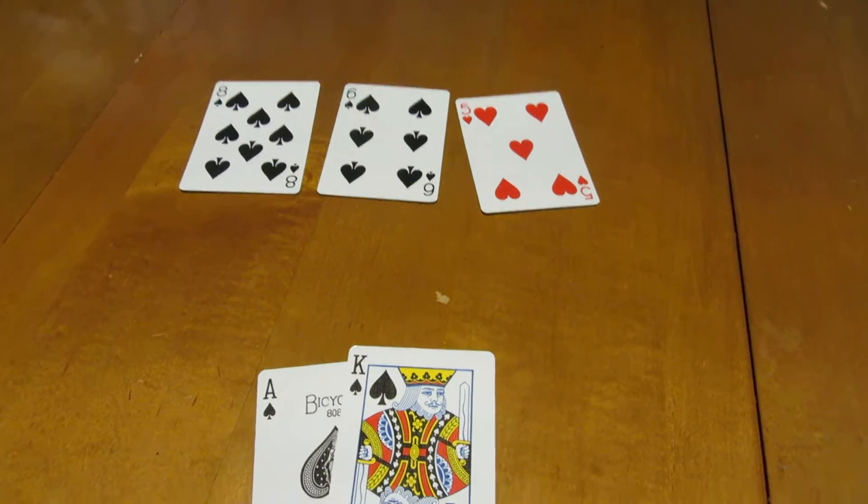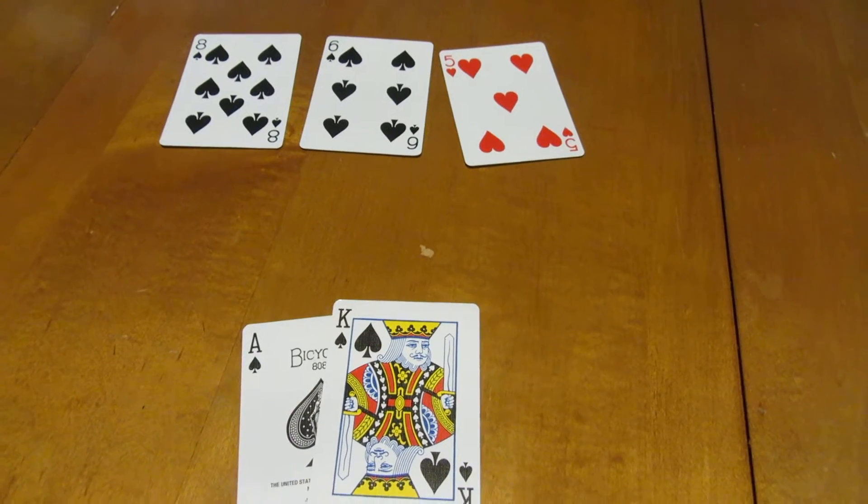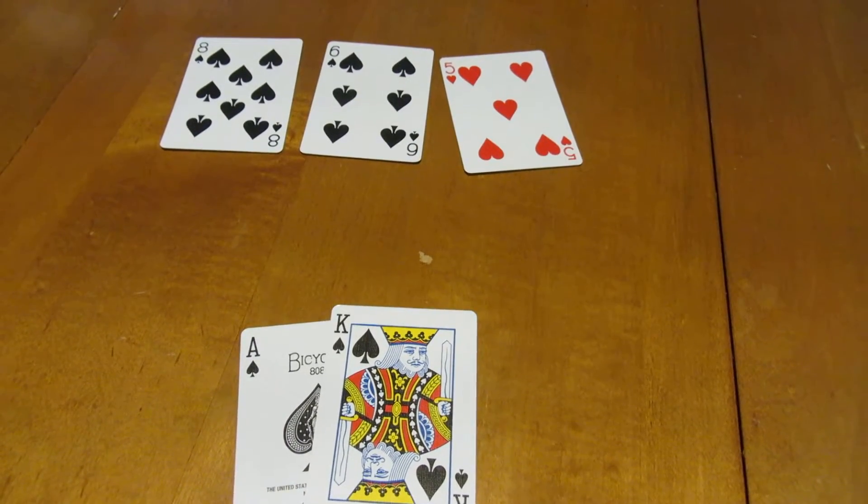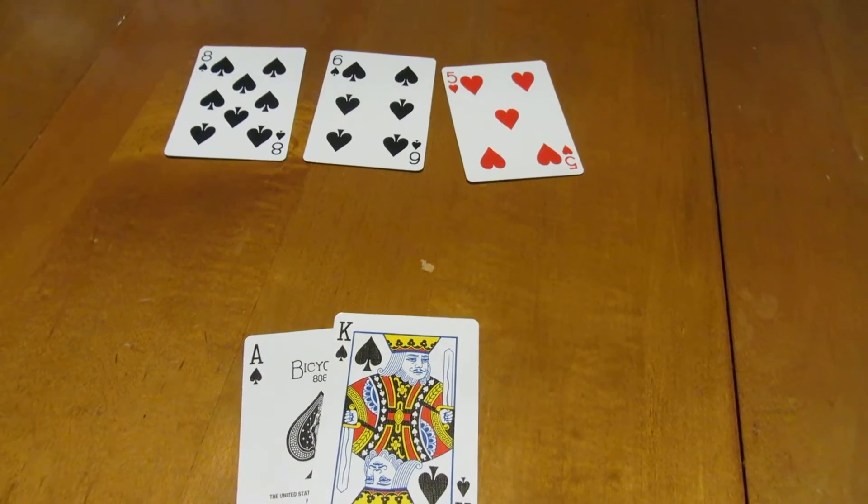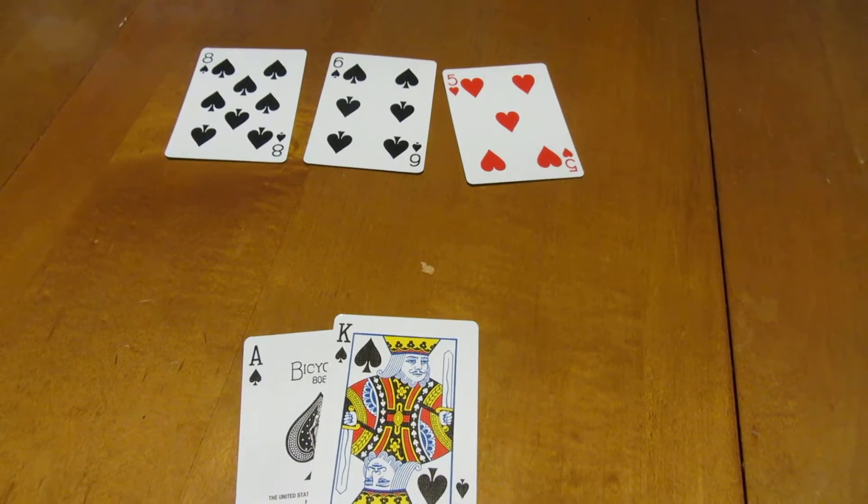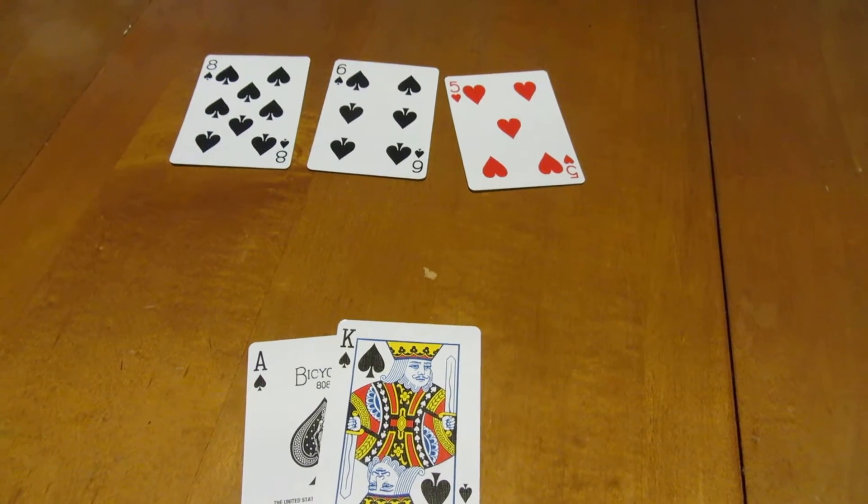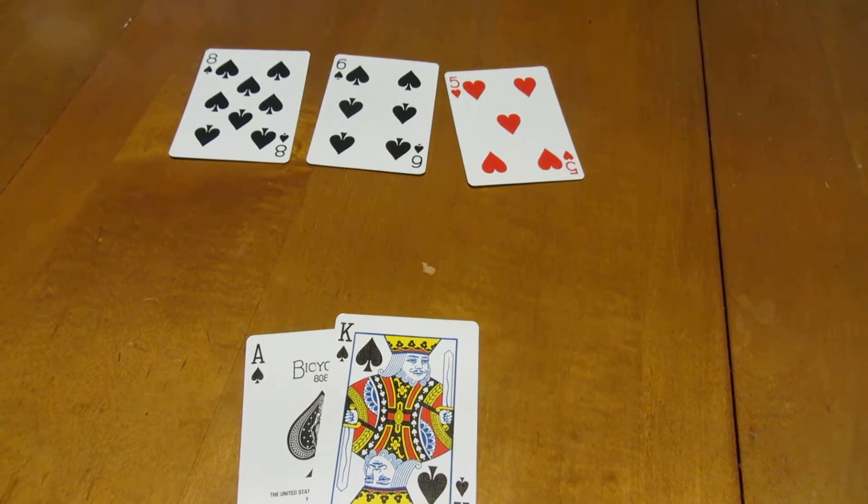There's a couple ways you can win this hand now. One is everybody misses, which in a big table is fairly unlikely, but with a flop like that is possible. Then your Ace can be high and win it.